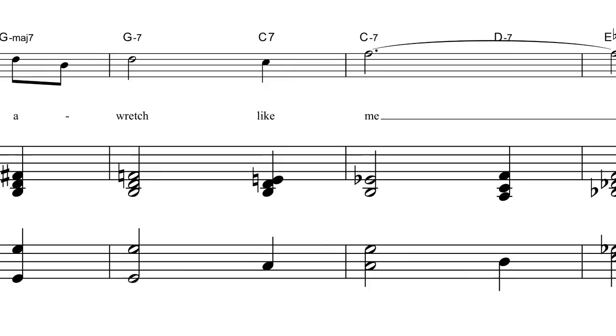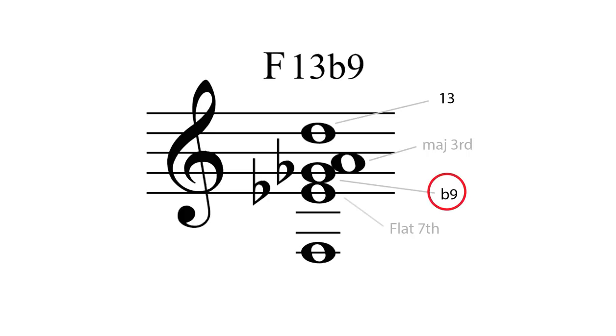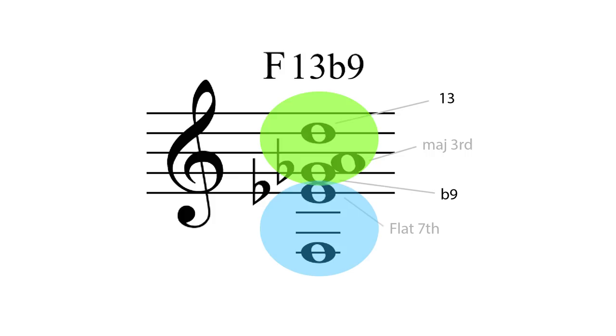The last colour to look at is the F13 flat 9 chord. The flat 9 is G flat, the 13 is D. This chord essentially now is a D triad over an F dominant 7th chord, an upper structure triad. An emotional dominant 7th chord that Stevie Wonder is fond of.